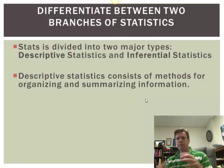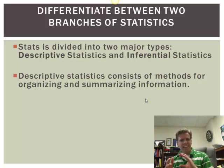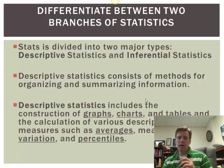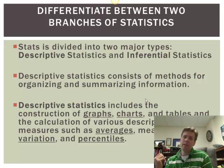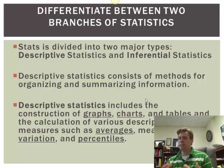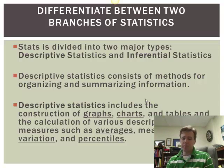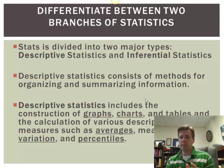Descriptive statistics consist of methods for organizing and summarizing information — graphs, charts, tables — for looking at something visual. Even for numbers like mean, median, and mode, those are called measures of central tendency or averages. And measures of variation like standard deviation and even percentiles. All that's included with descriptive statistics.